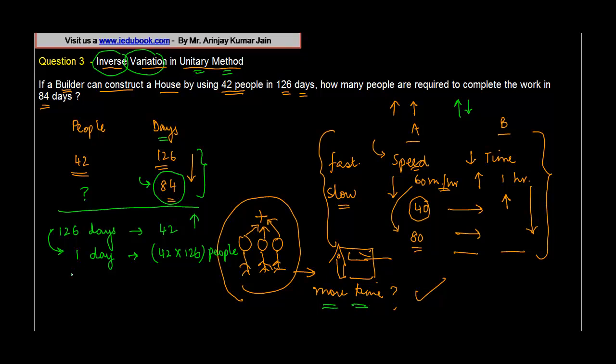But we need to complete the work in 84 days, so the number of days is now increasing. Obviously the number of people required will be decreased. And how do you decrease? 42 into 126 divided by 84. Obviously 42 goes off, 84 goes off, we get 2 here. 126 when knocked off 2 will give you 63. So you will require 63 people to complete the work in 84 days.